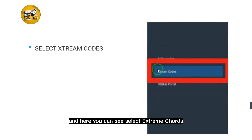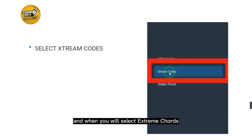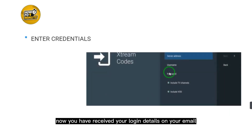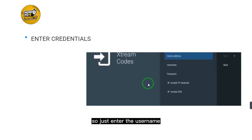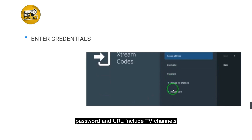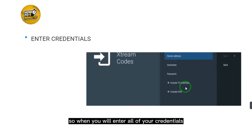Here you can see the option to select Xtream Codes, so just select Xtream Codes. Now, you will have received your login details on your email, so just enter the username, password, and URL — including TV channels and VOD — from your email. Just copy and paste them here.